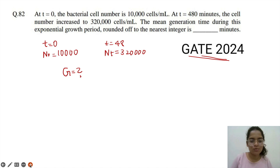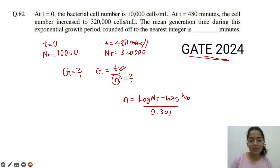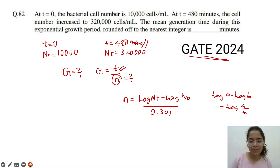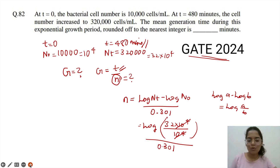We have been asked for the mean generation time, which means g. g = t / n, and t we already know is equal to 480 minutes. We need to find n. n = (log Nt − log N0) / 0.301. This uses the logarithmic rule log a − log b = log(a/b). So it is log(32 × 10⁴ / 10⁴) / 0.301. The 10⁴ terms cancel, giving log 32 / 0.301.